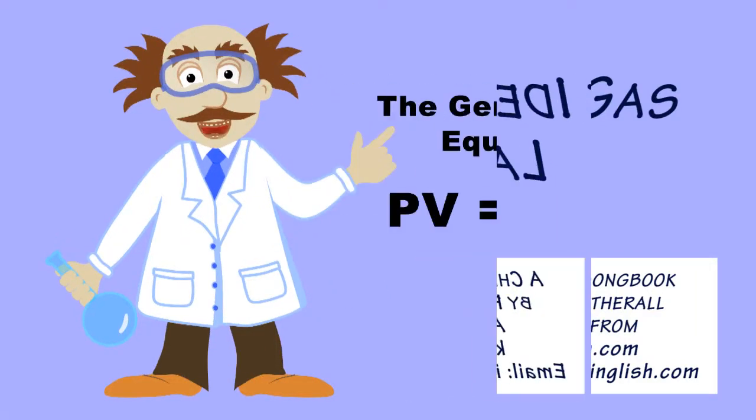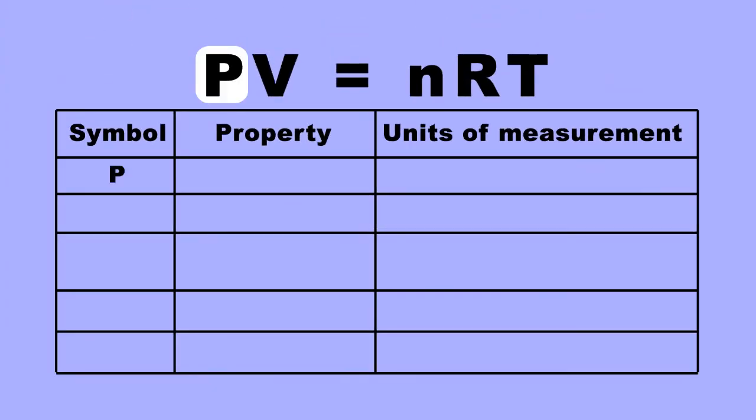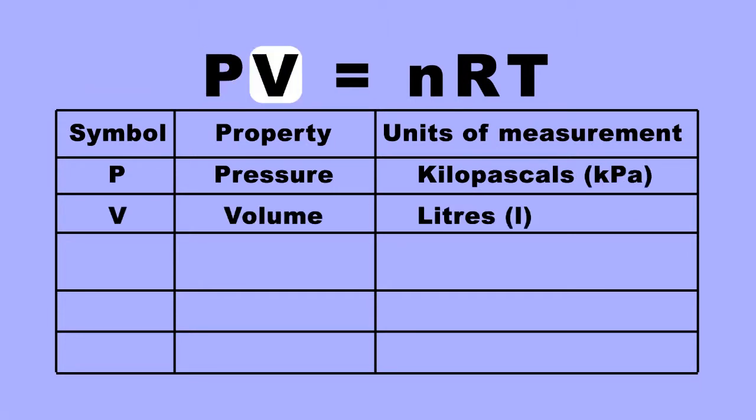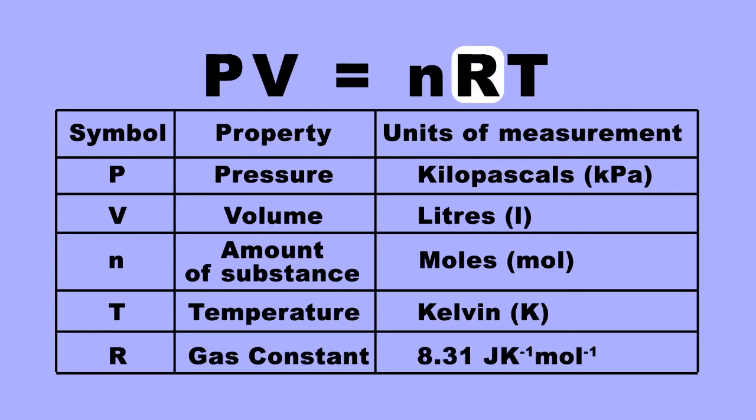The Ideal Gas Law, also known as the General Gas Equation, states that PV equals nRT, where P is the pressure of gas measured in kilopascals, V is its volume measured in litres, n is the number of moles of gas particles, T is its temperature measured in Kelvin, and R is a constant of proportionality equal to 8.31 joules per Kelvin per mole.